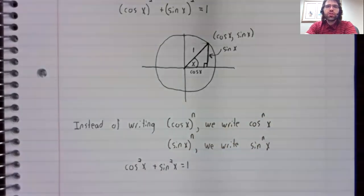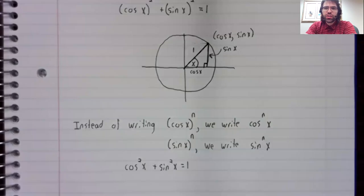The cosine squared x plus the sine squared x equals 1.